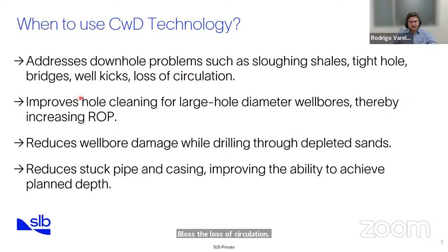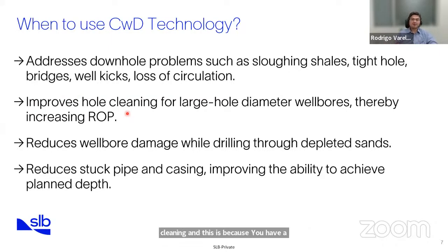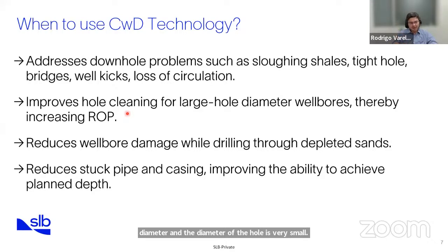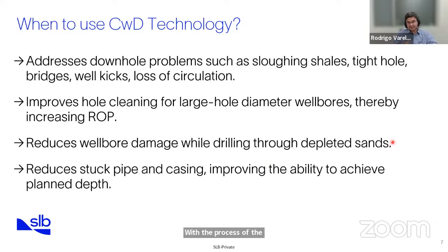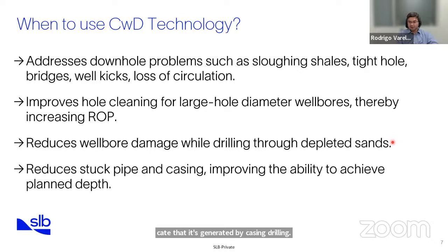An additional advantage is that casing drilling improves hole cleaning. This is because you have a large diameter casing with a big OD, so the clearance between the casing outside diameter and the hole diameter is very small. Therefore you have high fluid velocities in the annulus and can clean the well fast. Another advantage is reduced wellbore damage while drilling through depleted sands, because the cuttings generated during casing drilling are smashed into the formation, creating a much better filter cake than conventional drilling. When you have a better filter cake, you have less mud invasion and less wellbore damage.